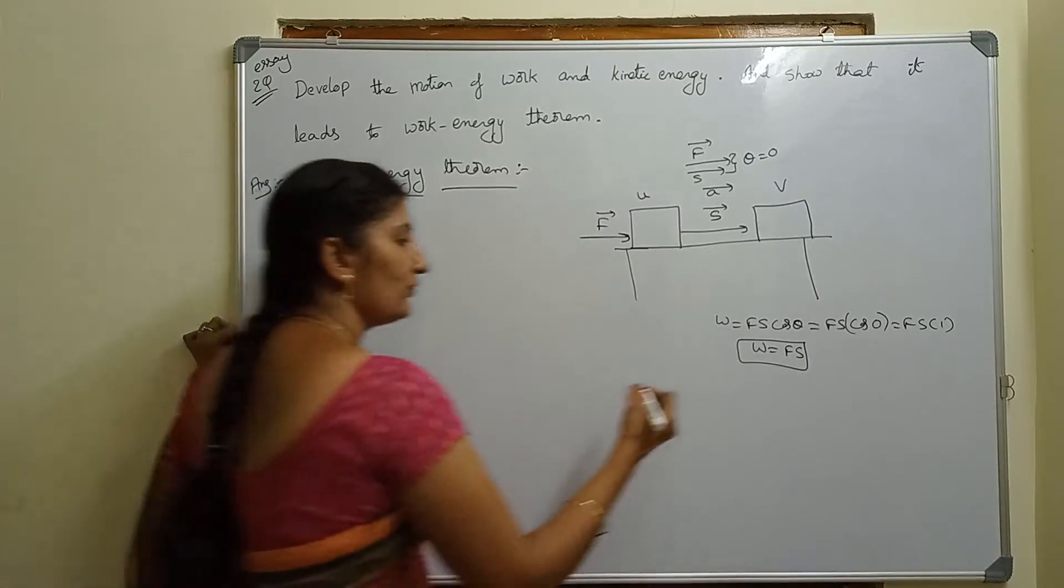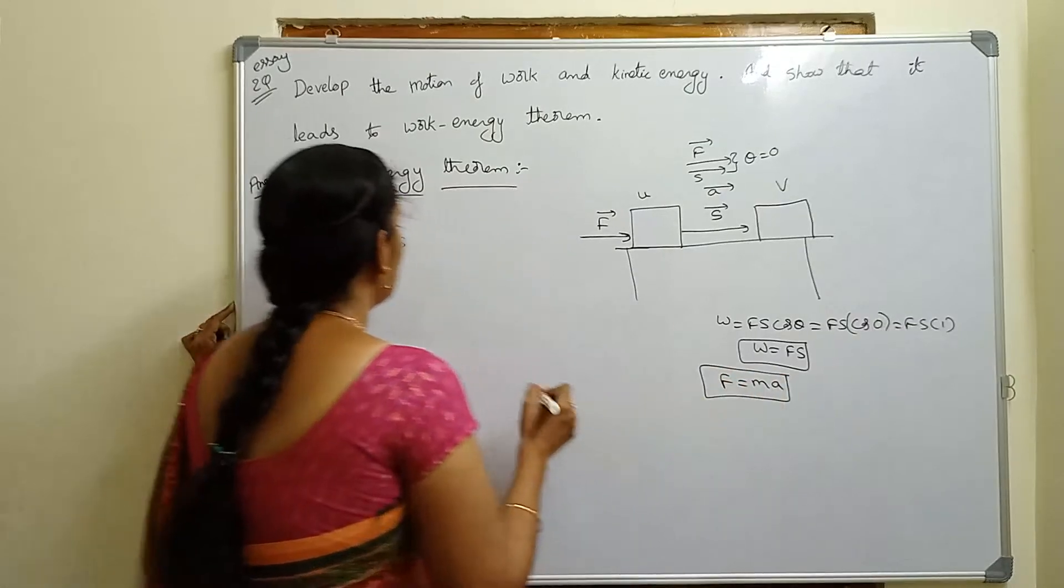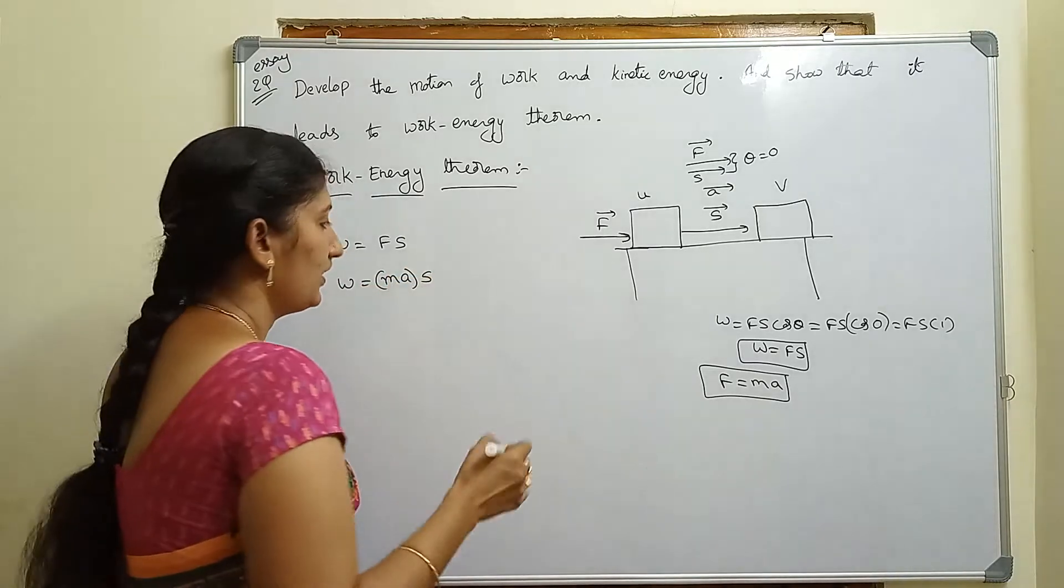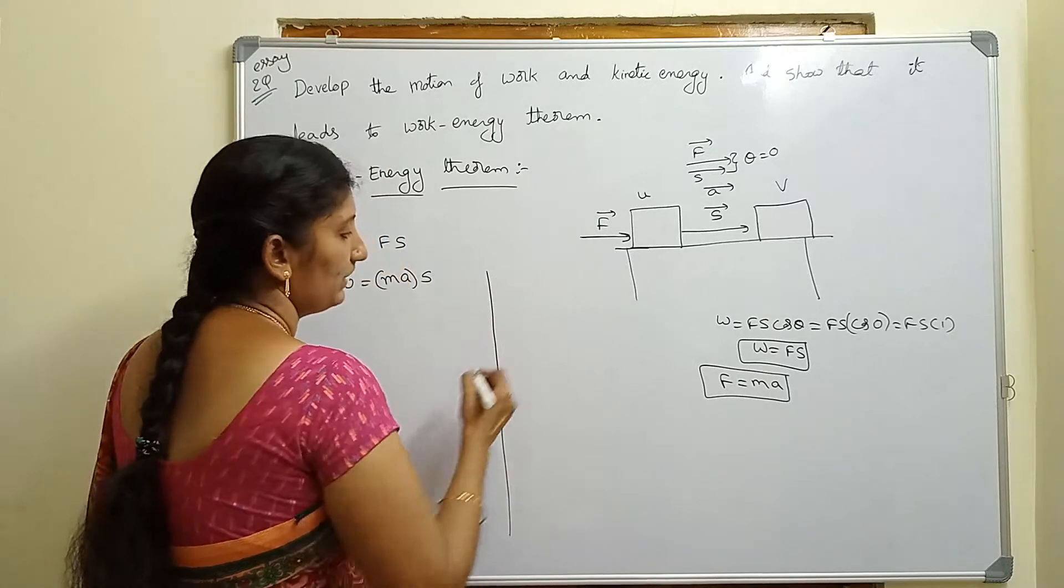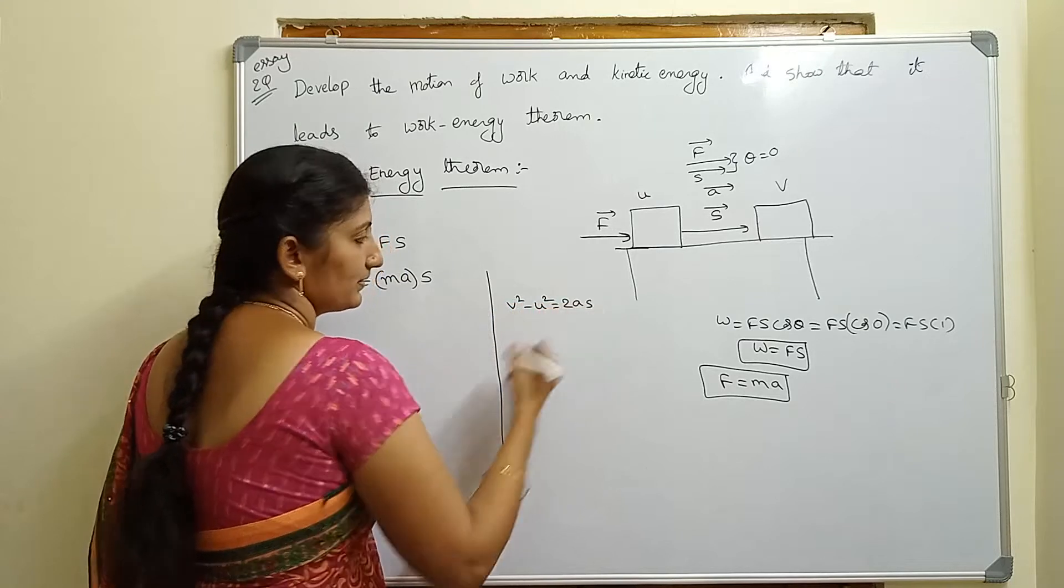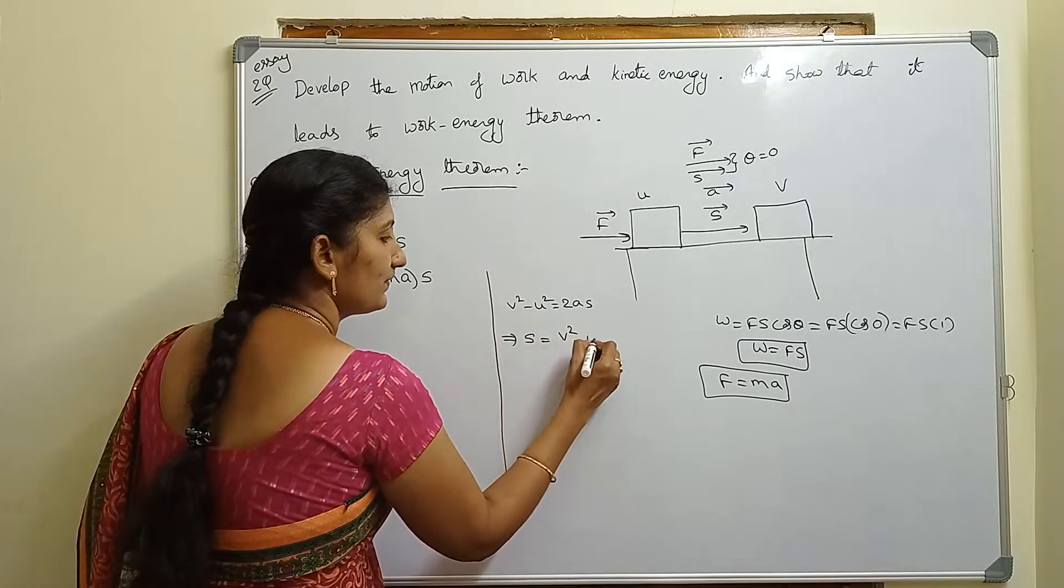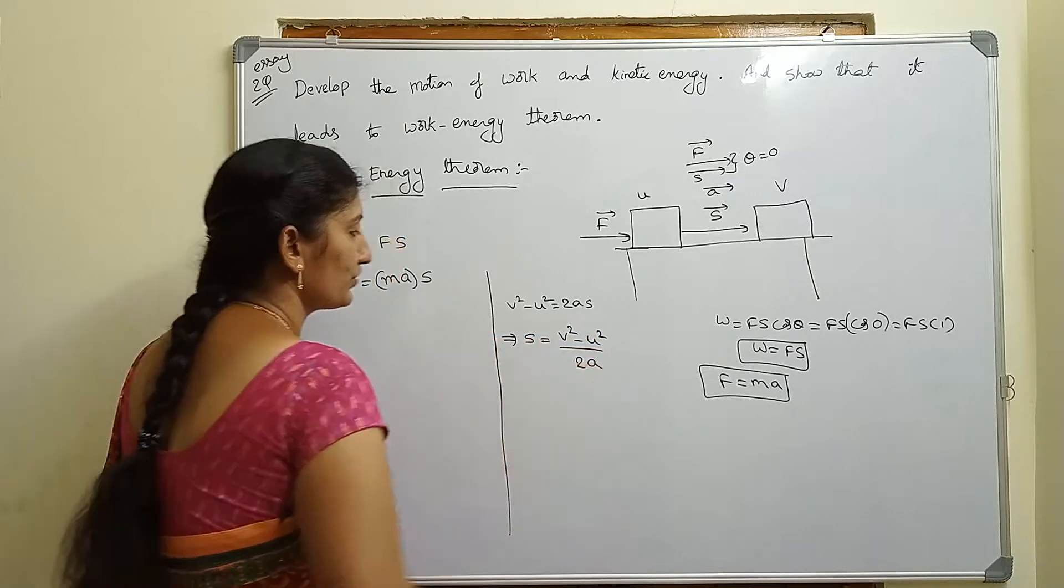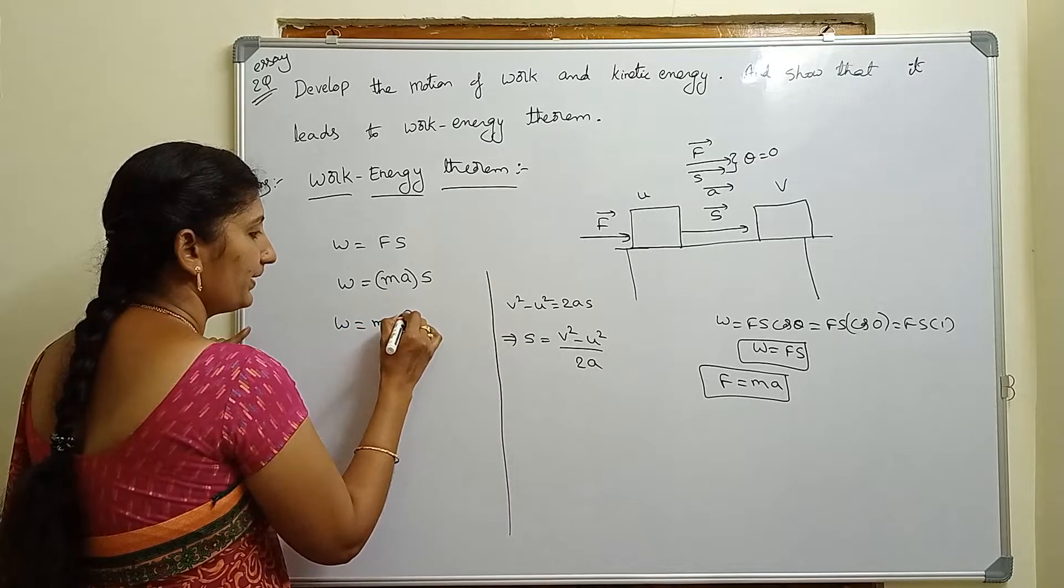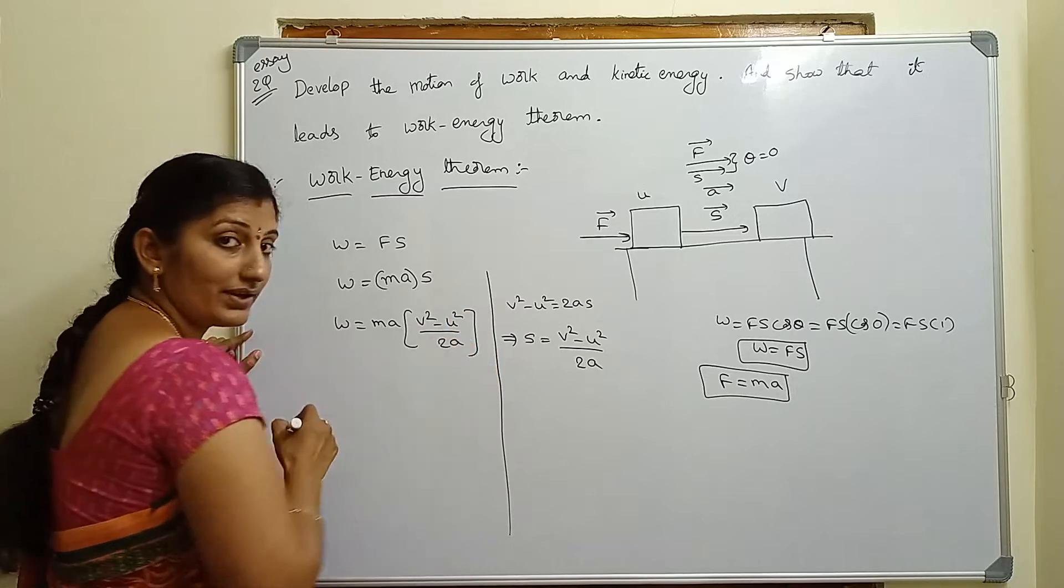W equals F. Force in terms of mass into acceleration, so F equals ma. Substitute as W equals mass into acceleration into displacement. We recall the kinematic equation: V² - U² = 2aS. So S equals (V² - U²) by 2a. Substitute this value of S. W equals ma into (V² - U²) by 2a.